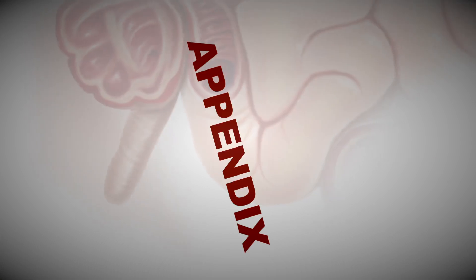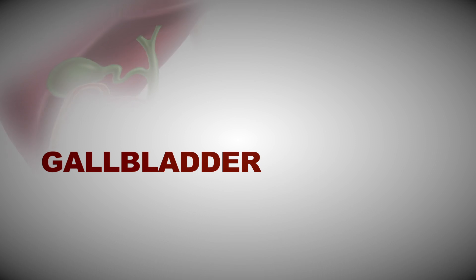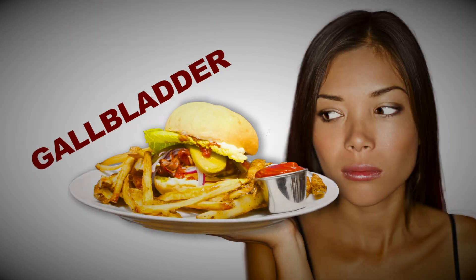For instance, the appendix plays an important role in the immune system, which helps us fight off illness. The gallbladder is another organ that was once considered useless, but we now know it's needed to digest fats.